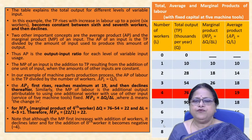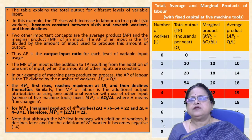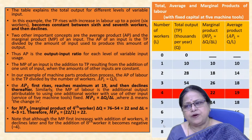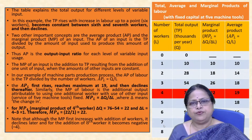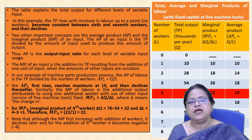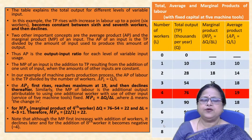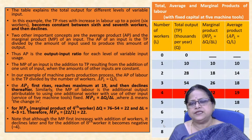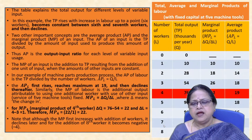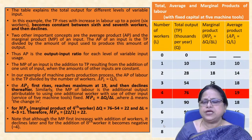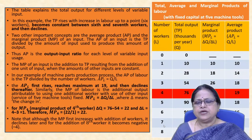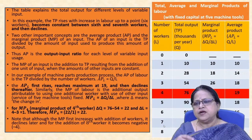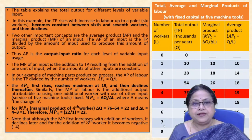The table has three columns: number of workers, total output (thousands per year), marginal product of labour (MPL), and average product of labour (APL). APL equals total quantity of output divided by total number of labour (Q/L), while MPL equals ΔQ/ΔL. As workers increase from 1 to 8, total product increases: 10, 28, 54, 76, 90, 96, 96, 92. Average product rises to a maximum of 19 at the 4th worker, then falls to 18, 16, 13.5, and 11.5.